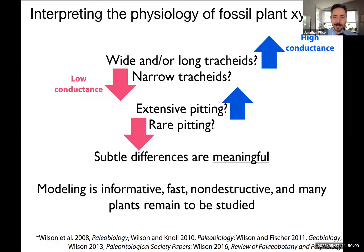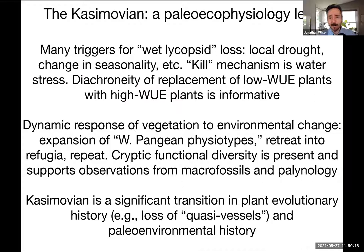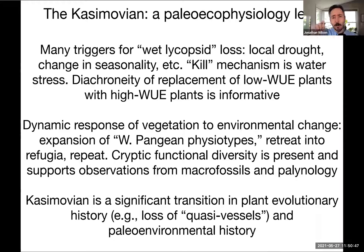Turning to the Casamovian, several aspects of regional climate could result in extirpation of the wet lycophytes: local drought, seasonality, rain shadow from orography, and temperature. The fact that this replacement is occurring asynchronously is instructive — it tells us there is a feedback between the abiotic earth and the biosphere. There is also a dynamic response of vegetation throughout the Casamovian: expansion of certain physiotypes, then retreat, then repeating. Within these changes, we'd expect functional diversity to be present — marginally more drought-resistant lycophytes would be predicted to survive, and a closer look at these plants may be instructive.